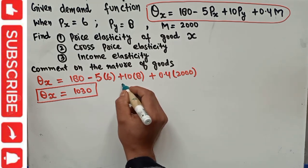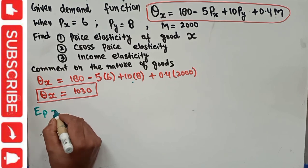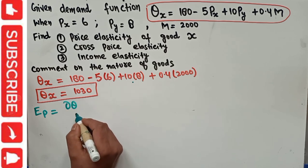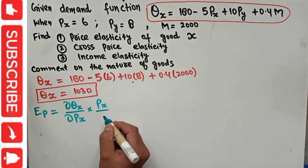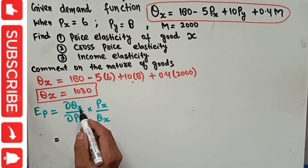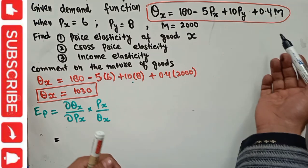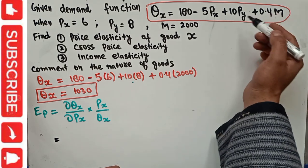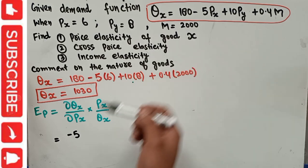First, we calculate the price elasticity of demand, denoted E subscript P. Price elasticity of demand is the change in quantity of good X due to the change in the price of good X. We take DQX upon DPX — that is, partially differentiating the demand function with respect to PX. Since PX appears only in the second term, the derivative of all other terms is zero, and the derivative of PX is 1, leaving us with minus 5.